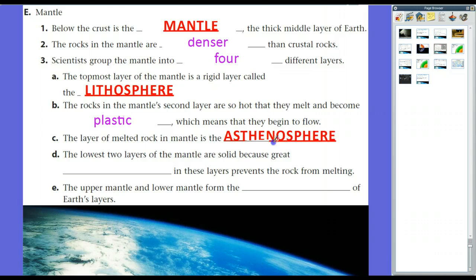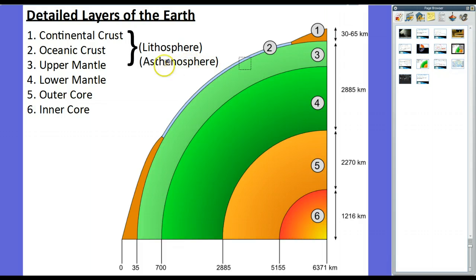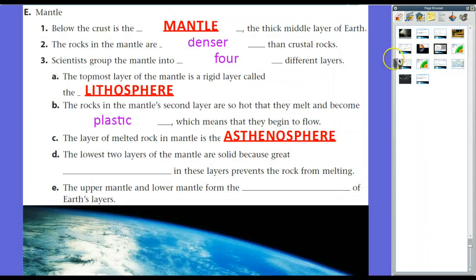Now, this layer is what we call the asthenosphere. This is the asthenosphere. And let's go back and let's look at this. So the asthenosphere is right in this vicinity. And the lowest two layers of the mantle, they're below the asthenosphere, they're not liquid. In fact, they're solid, because of the high amounts of pressure. And the upper layer of the mantle and the lower layer of the mantle form the largest part of the Earth's layers. Like I said, the mantle itself is about 3,000 kilometers thick.